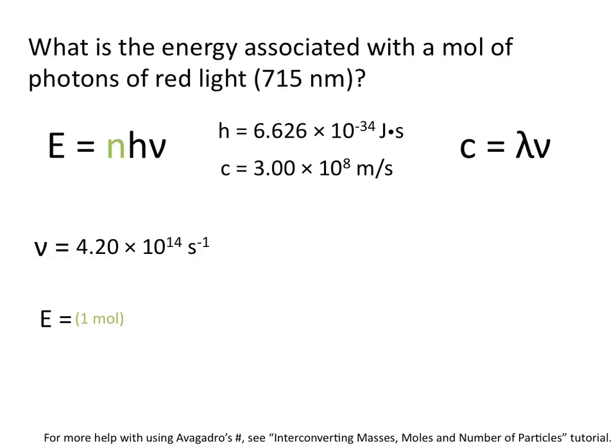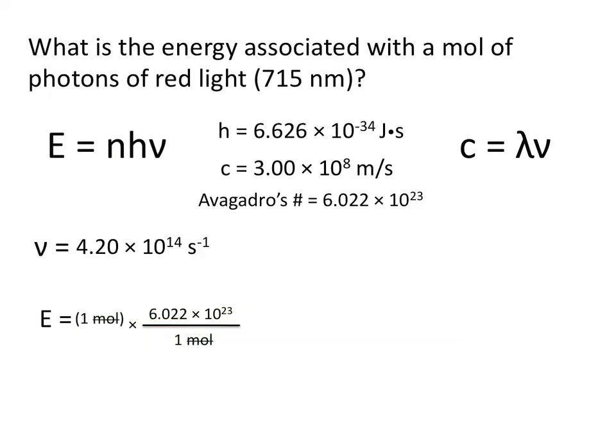In a lot of equations you'll see n being equal to the number of moles, but in this equation, n is equal to the actual number of photons. So one mole of photons is 6.022 times 10 to the 23rd photons. Remember that Avogadro's number is equal to one mole, so we need to do this conversion first. This allows us to cancel out units of moles and leaves us with the actual number of photons.